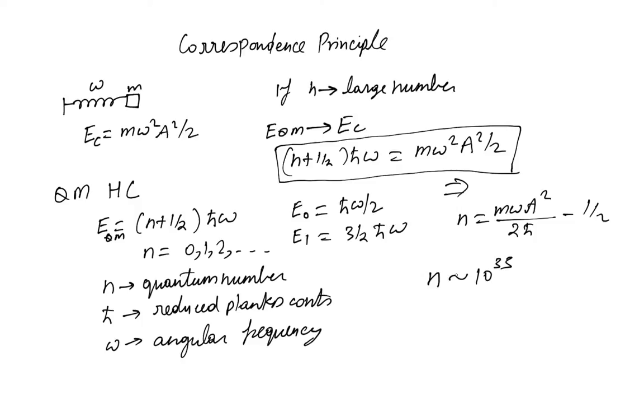This is a very large number. So what this is saying is that for a very large N, the expression derived in quantum mechanics is similar to what we obtained for classical mechanics, which means a quantum mechanical system behaves like a classical system for very large N, and this is called the correspondence principle.